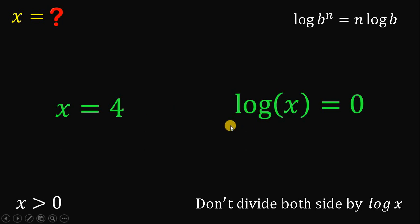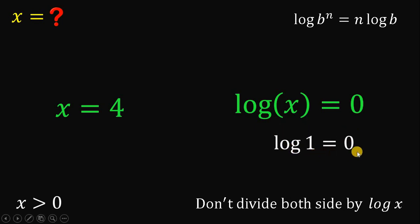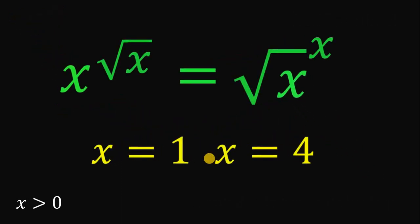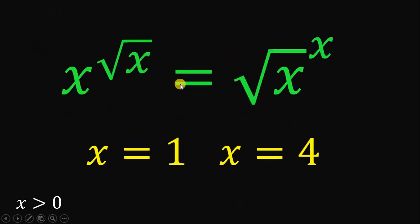For the second equation, logarithm of x equals 0. Using the identity that logarithm of 1 equals 0, therefore x must be 1. So our final answer to this question — given that x raised to the square root of x equals square root of x raised to x, wherein x is greater than 0 — is x equals 1 or x equals 4. And as always, we are done.